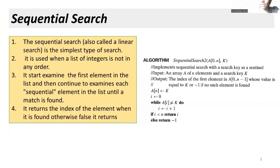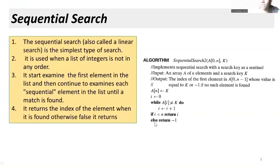We also need to increment the index value only up to n — we cannot run the loop beyond the number of elements in the list. If the key value is found at a particular index and that index is less than n, we return the index value i. Otherwise, in the else condition — when we have searched through all elements and still have not found the key — we return minus 1, which means false: the element is not found.